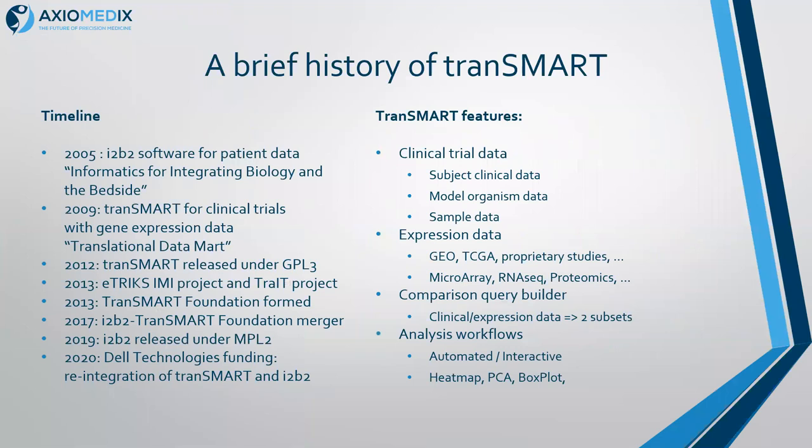The project itself started some 15 years ago as I2b2, which is a software warehouse to store patient data and to create cohorts for clinical trials. After a few years, the code branched out into a proprietary branch called Transmark to analyse the results of clinical trials, both the patient data and the gene expression data that was generated.